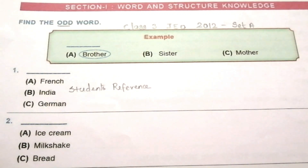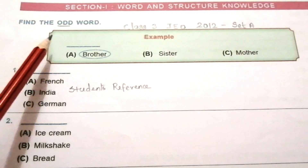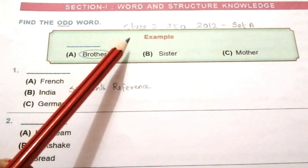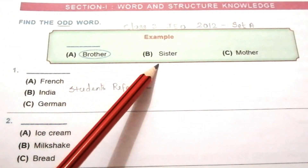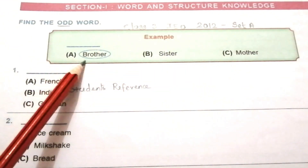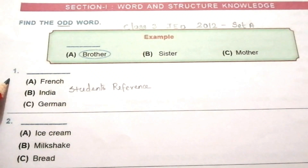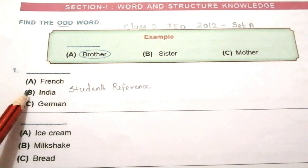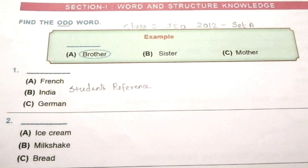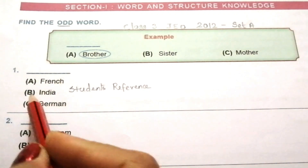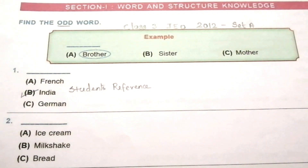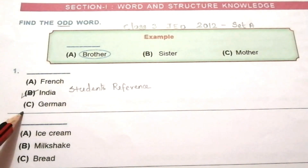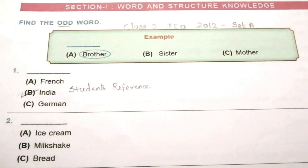The first topic is Word and Structure Knowledge. Find the odd word. Example: brother, sister, mother — the odd one out is brother. Question 1: French, India, German. The answer is B, India. French and German are languages; India is a country.